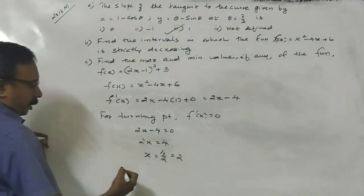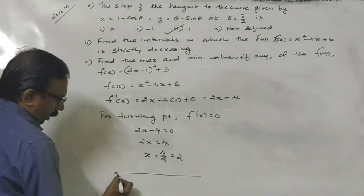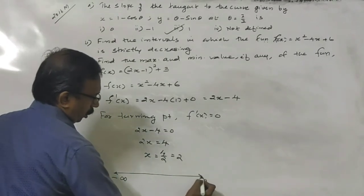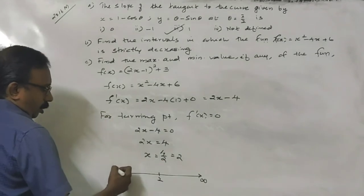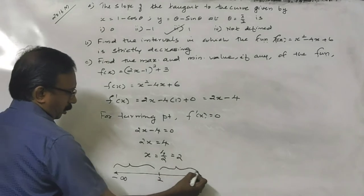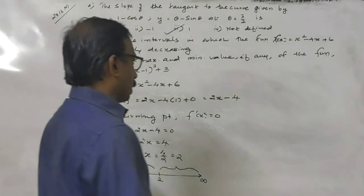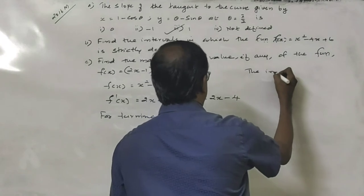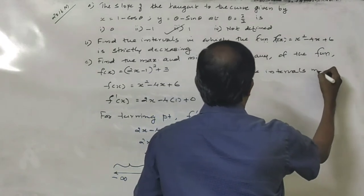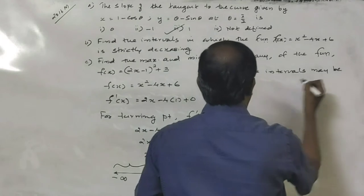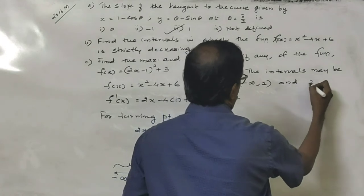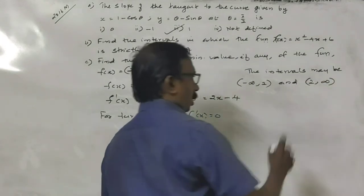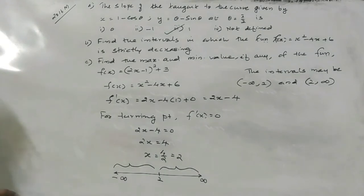The function is a real function, so we have the domain from minus infinity to plus infinity. The turning point is 2, so we have two intervals: minus infinity to 2, and 2 to infinity. Now, we have to find in which interval the function is decreasing.